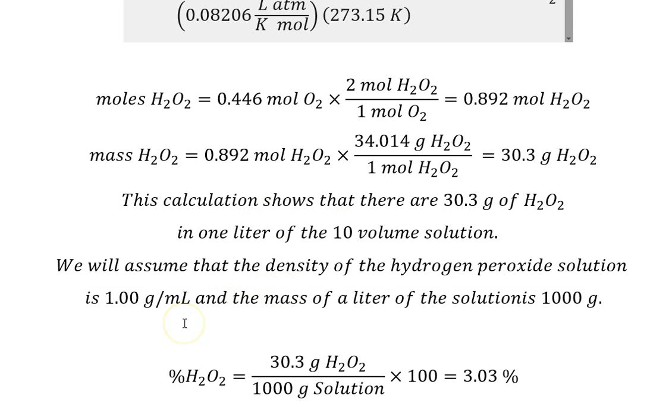Now we will assume that the density of the hydrogen peroxide solution is one gram per milliliter. You could do it more finely if you looked it up. It wouldn't be too much off from that.